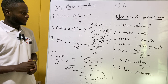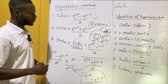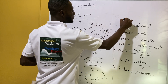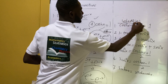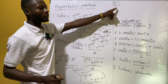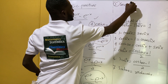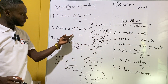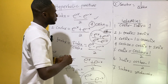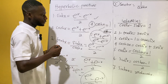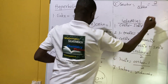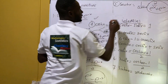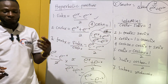The fifth hyperbolic function is sech. We know that sech is one over cosh, so we take the reciprocal of the cosh function. That flips it upside down and we get two over e^x plus e^(-x), and that is the hyperbolic function for sech.